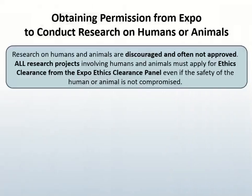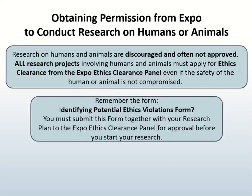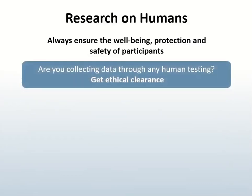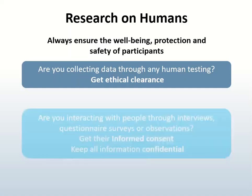Research on humans and animals is discouraged and often not approved. All research projects involving humans and animals must apply for ethics clearance from the Expo Ethics Clearance Panel using the Identifying Potential Ethics Violations form. If you are doing your research at a university or a recognized research institute, then get approval from their research ethics committee. Always ensure the well-being, protection, and safety of participants. If your research involves any interaction or testing on humans, get ethics clearance. If you are interacting with people, get informed consent.